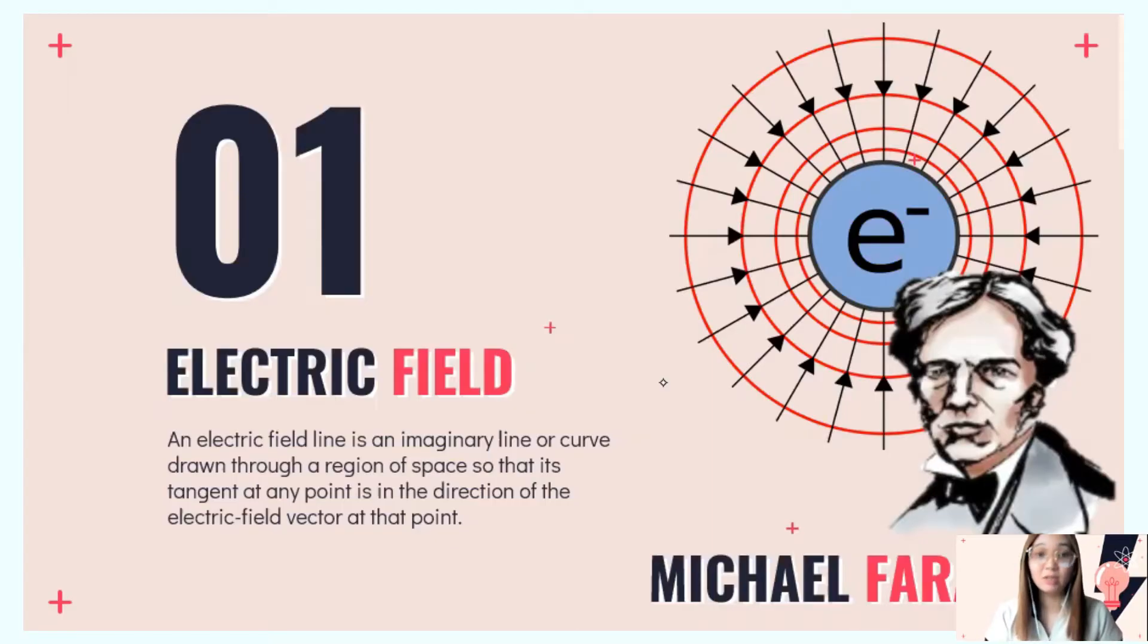Electric field was discovered by the scientist Michael Faraday. He defined electric field using lines—an imaginary line or curve drawn through a region of space so that its tangent at any point is in the direction of the electric field vector at that point.